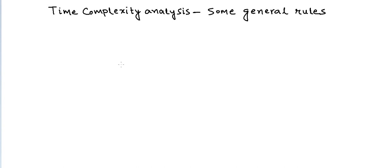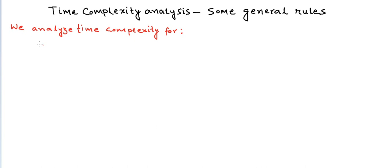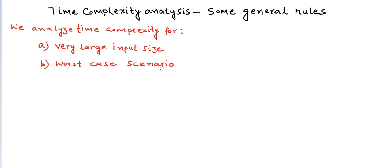In the previous lessons, we learned how to calculate the running time of an algorithm, and we also learned about asymptotic notations as a way to classify these running times into some generic classes. In this lesson, we will learn about some techniques and rules using which we can avoid doing all these complex calculations and still derive the time complexity expression in terms of O or Theta notation. We analyze time complexity in most cases for: (a) very large input size, and (b) worst case scenario.